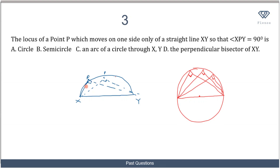Tracing all positions of P where angle XPY equals 90 degrees would give a full circle. But since P is restricted to only one side of line XY, we get only half of the circle — which is a semicircle. The correct option is B: semicircle. Whether P moves above or below the line, the result is a semicircle.